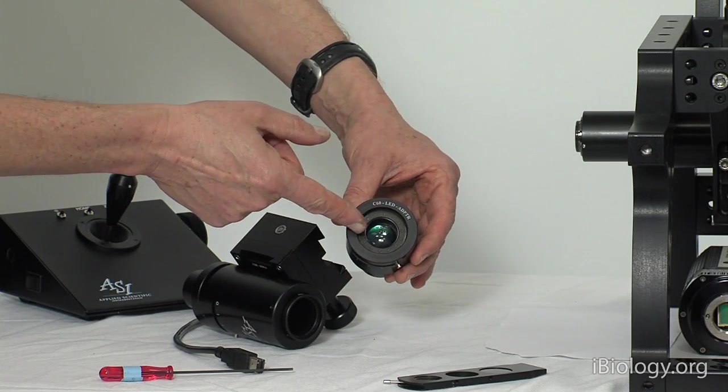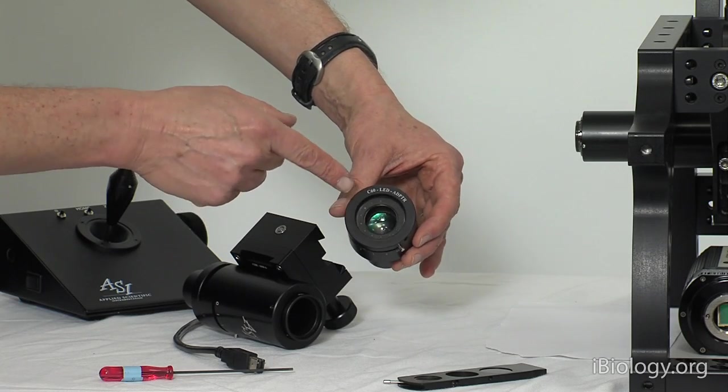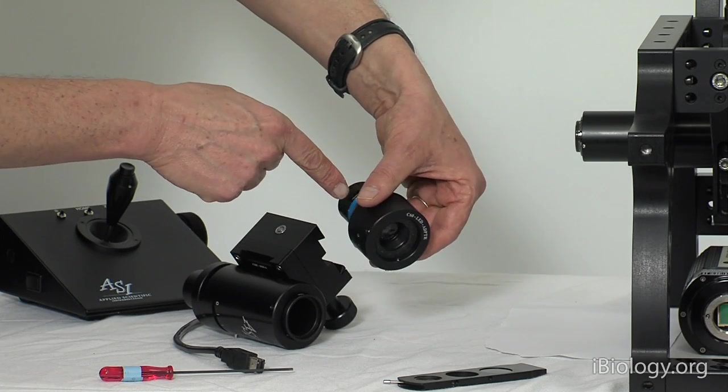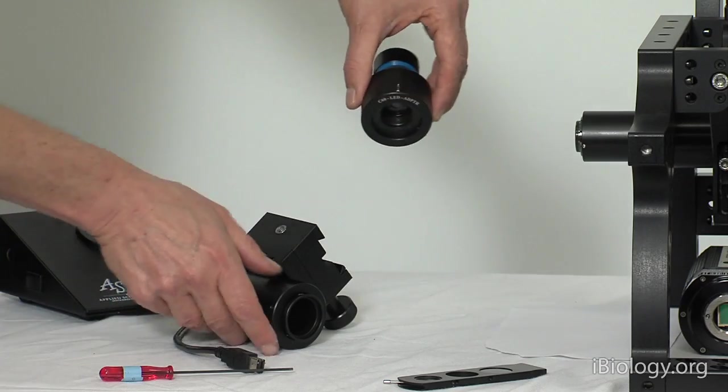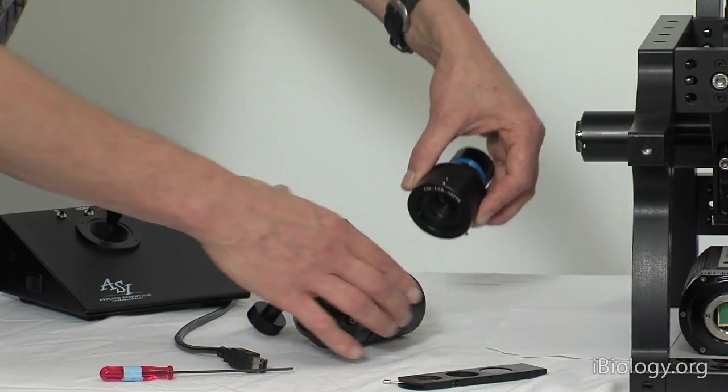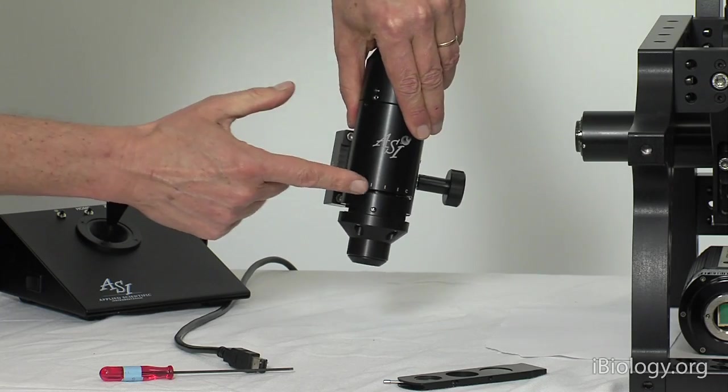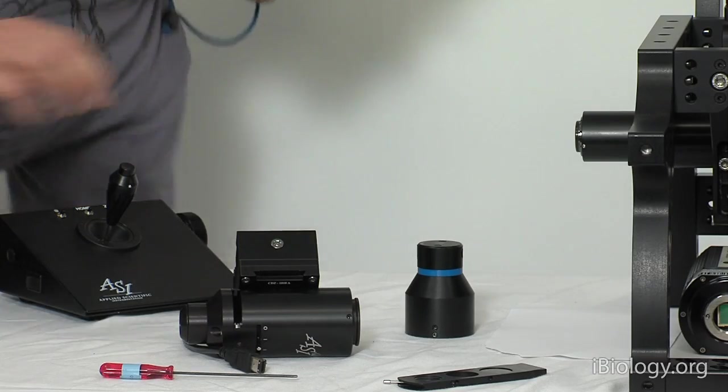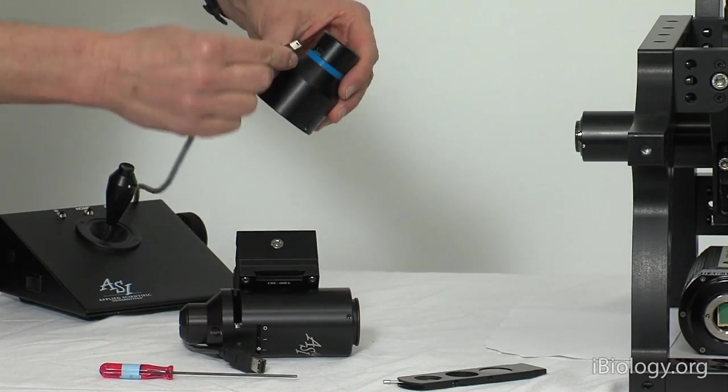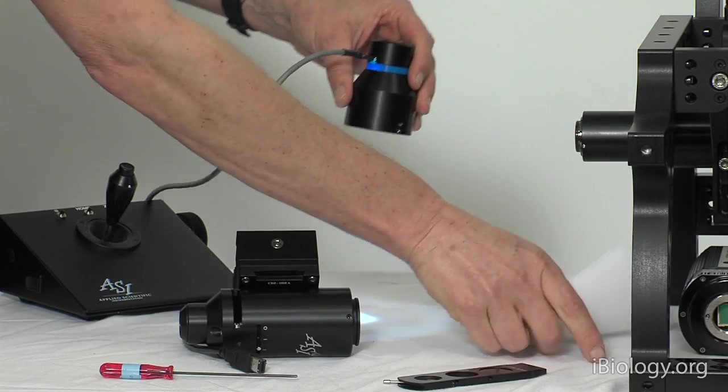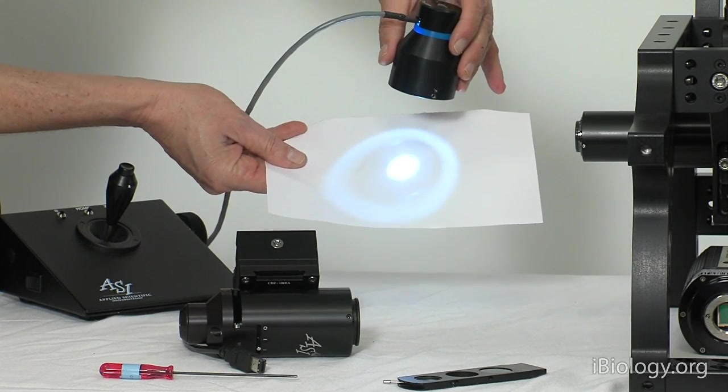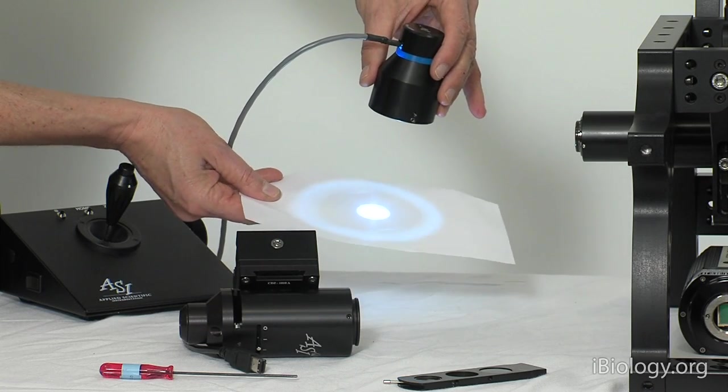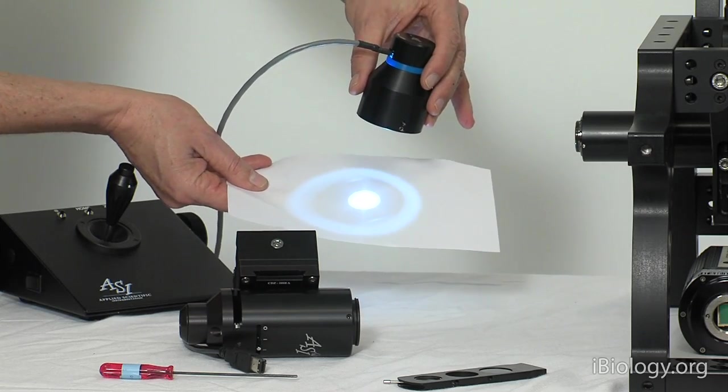Behind it you can see the reflections of the collector lens. That collector lens actually collects the image of the LED and then projects that image roughly at the condenser aperture. We can actually see that by lighting the LED again. You can see there's a focus roughly at this distance, so that is roughly where that condenser aperture sits.